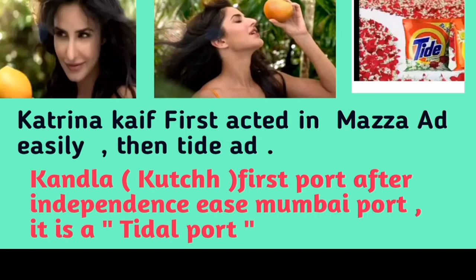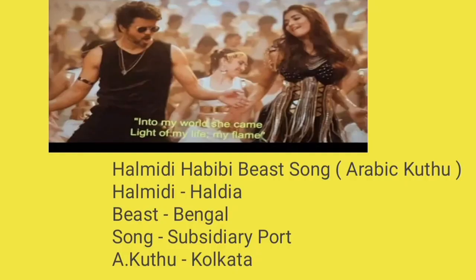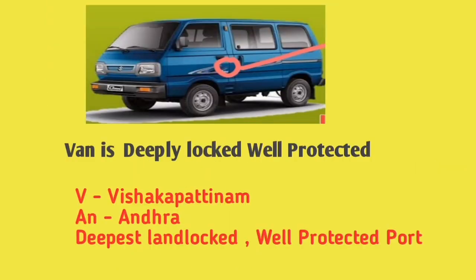The next mnemonic is a movie song: 'Halmati Habibu' — an Arabi Kuttu song. The first word 'Halmati' — H stands for Haldia. The movie name is Beast — B stands for Bengal. 'Song' represents subsidiary port. 'Arabi Kuttu' — K stands for Kolkata. So Haldia is in Bengal and is a subsidiary port of Kolkata.